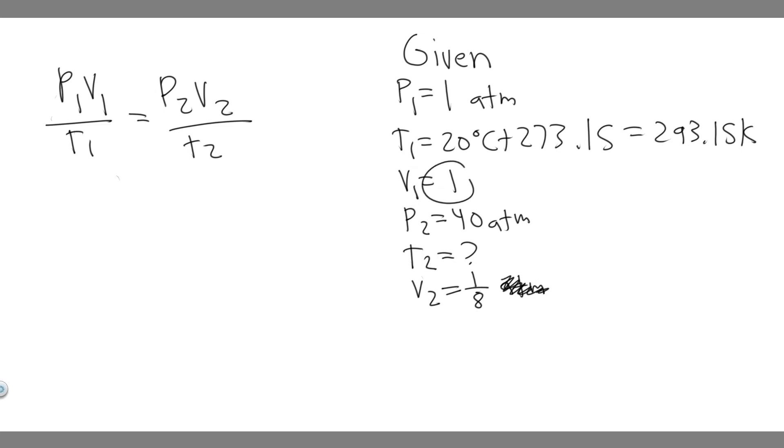But keep in mind, V1 is just going to be 1, while V2 is going to be one-eighth, because they're saying it's one-eighth in the second part, in this part of the system. So we also know the pressure at the second part, it's 40 atmospheres. And so now that we know everything, we got V2, P2, V1, T1, P1, we can solve for T2.